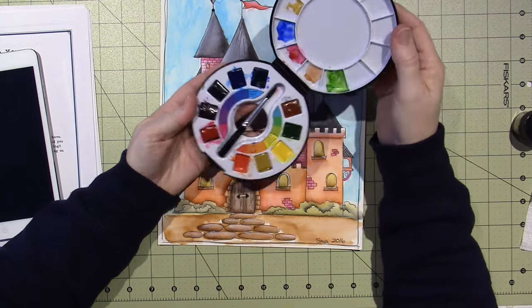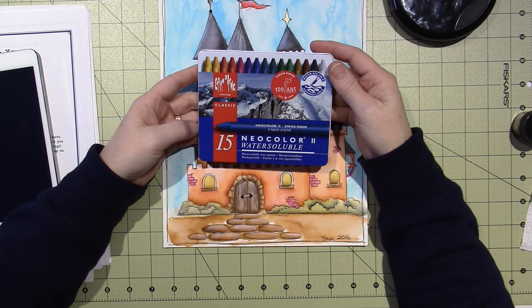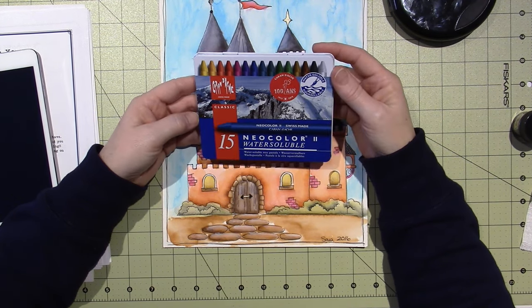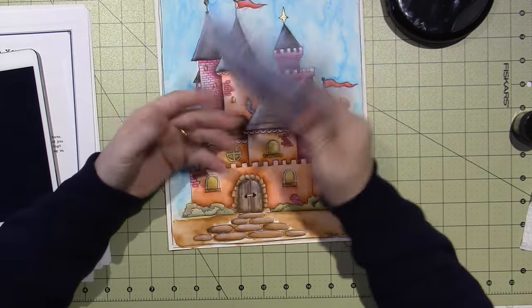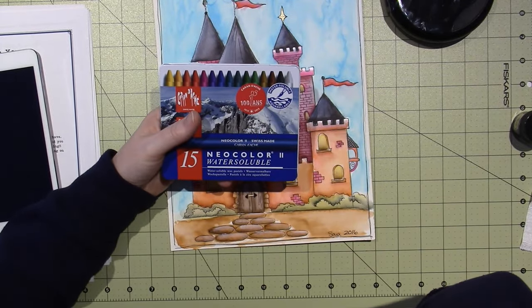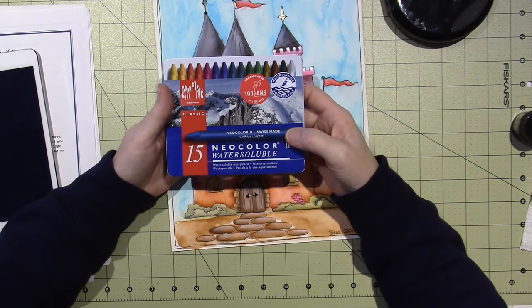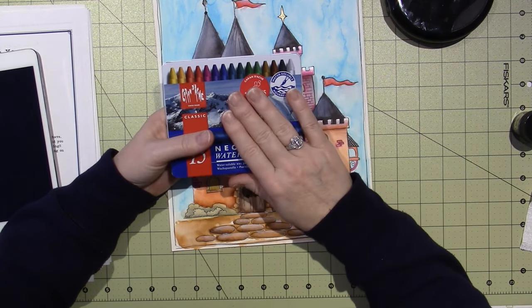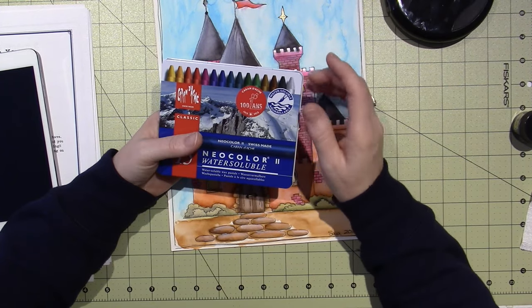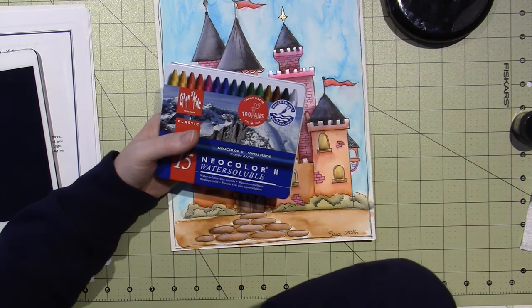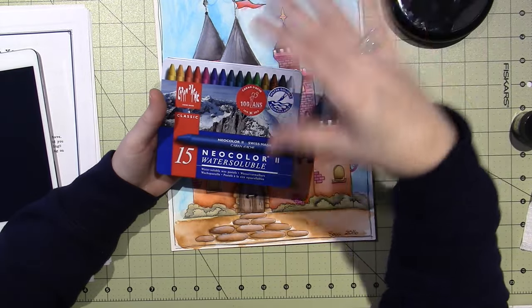But it works and the colors are really vibrant. I just ordered these, the Neo Color 2s, the water soluble crayons or wax pastels. So I'm really looking forward to trying these because I got these on Amazon. I think Jodi Ohl uses these in a class. I know Cece uses these for Cece's Creations. I need to watch Lindsay's classes better. Sometimes her classes are too advanced for me. I need to start at the beginning.